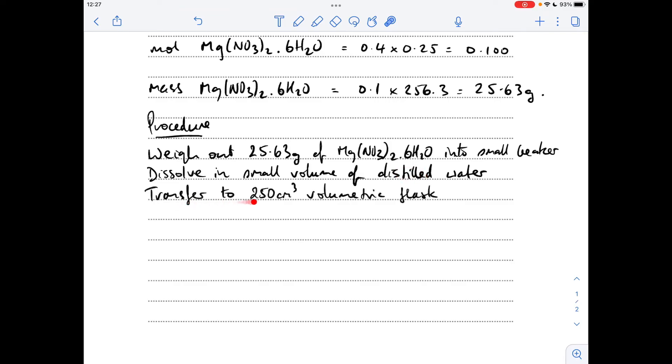You then transfer that to a 250 cm³ volumetric flask. You then rinse the beaker and then add what's called the washings to your volumetric flask.